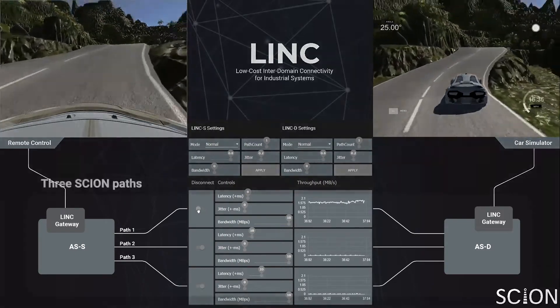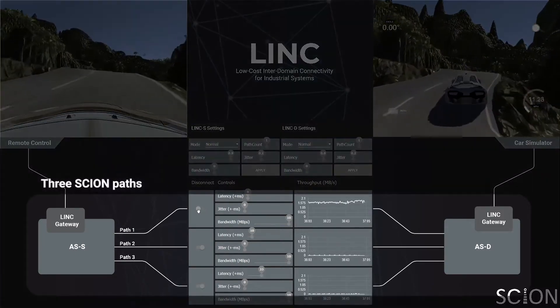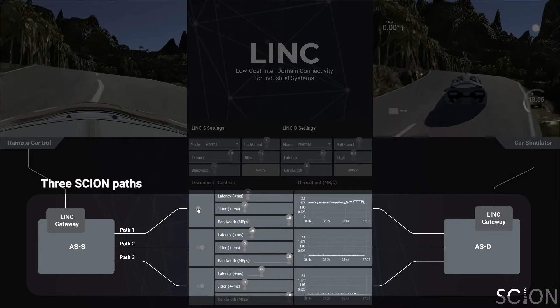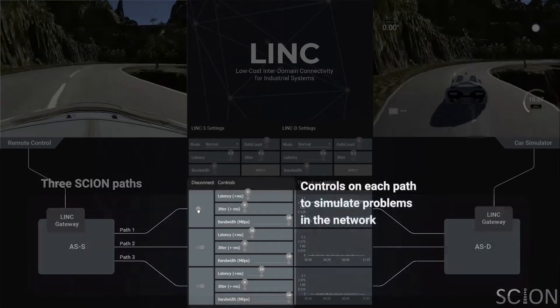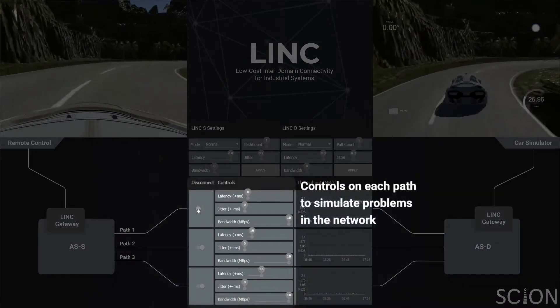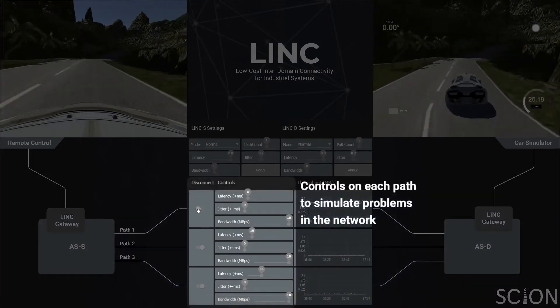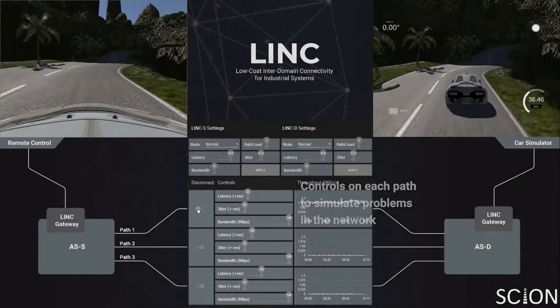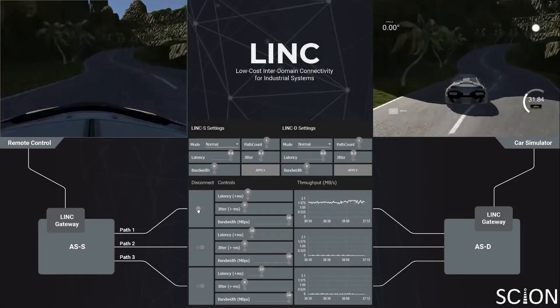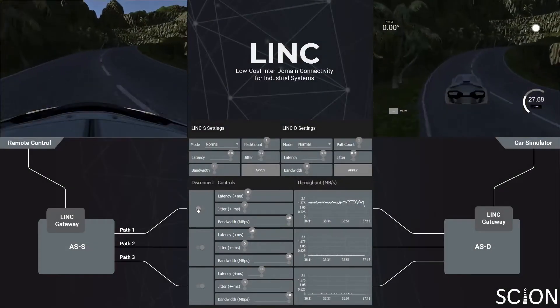In this demo, there are three Scion paths for LINK to choose from. With the controls, we can disconnect any path and change its quality in terms of latency, jitter, and bandwidth.